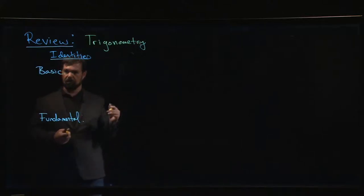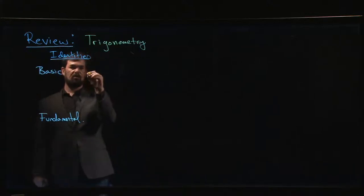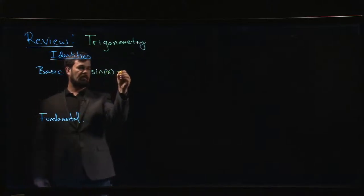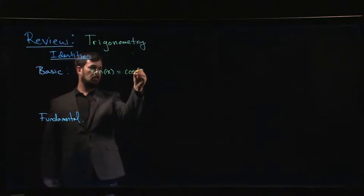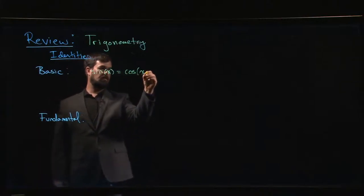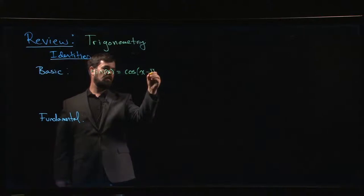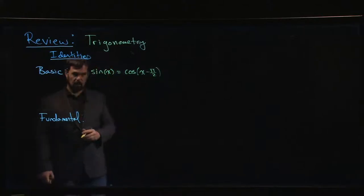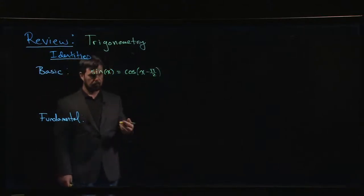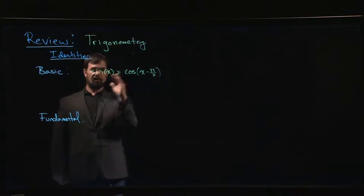Now, basic identities are some of these ones that we observed when we were pulling up the graphs. We saw this sort of translation identity, that sine x is the same thing as cosine of x minus pi over 2. So we have this sort of shift that relates the sine and cosine graphs.